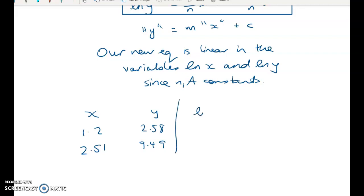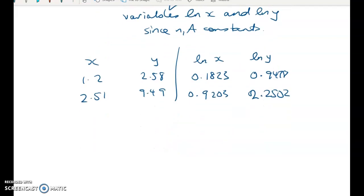So I started off straight away by going what's log of x and what's log of y. And I got these values. So we got 0.1823 here and 0.9478 here, 0.9203 here and 2.2502. And if you think about what we're trying to do now, we've got one point here and we've got one point here.